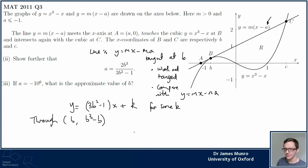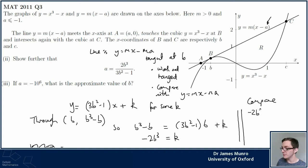So what does that tell me? That tells me that b cubed minus b is equal to (3b squared minus 1) times b plus the constant K. And then I probably want to rearrange that. So this minus b cancels out and I get 3b cubed on this side and I get b cubed over here. So this is going to be minus 2b cubed equals K. So that's the constant in my line. My tangent line, tangent of the curve, is y equals (3b squared minus 1)x minus 2b cubed.